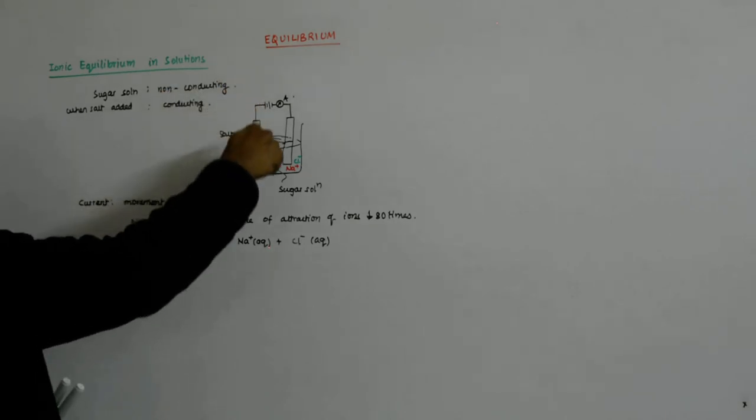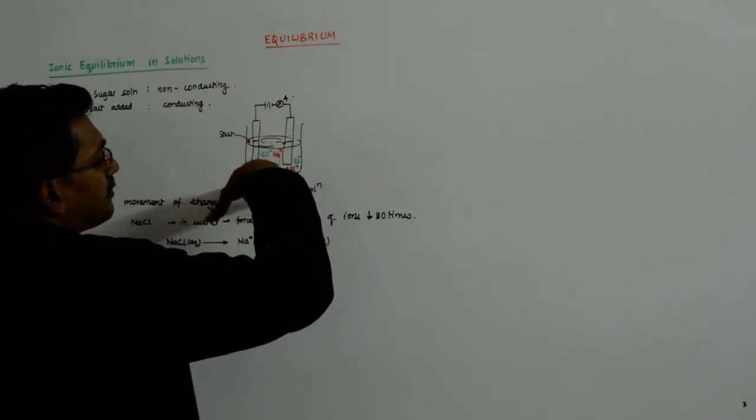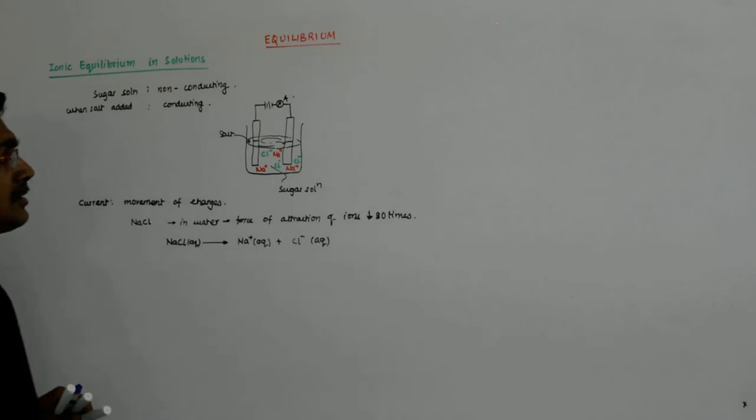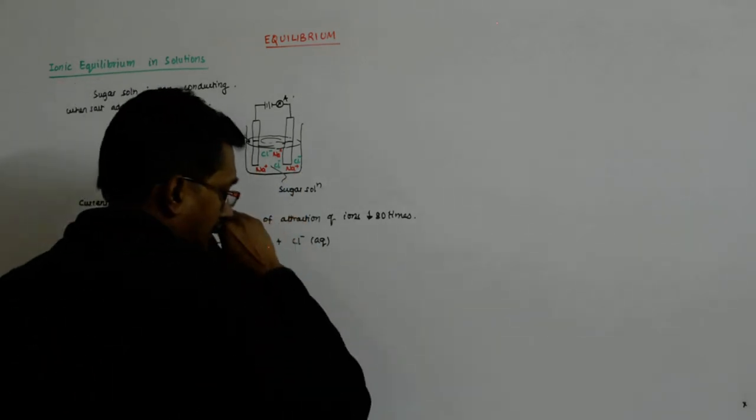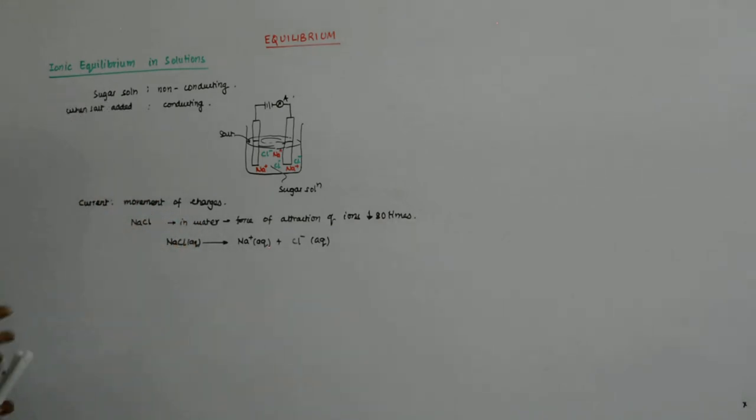Now, the moment you switch it on, what happens? The positives, they start moving towards the cathode, while the negatives, they start moving towards the anode. And that is why they are known as anions and cations.